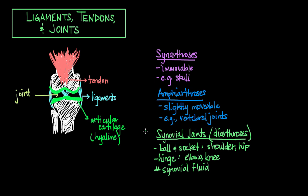The overuse of joints over time can lead to inflammation, which is called arthritis — from arth meaning joint and itis meaning inflammation. This can lead to permanent destruction of articular cartilage, which causes the pain and stiffness of arthritis.